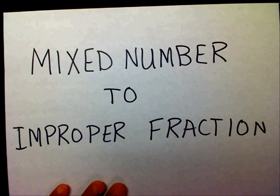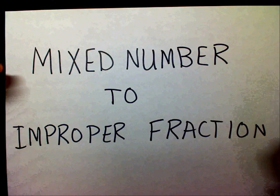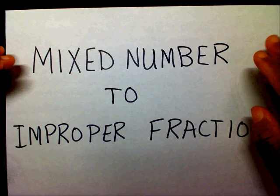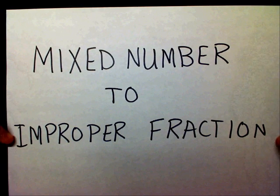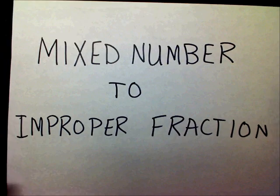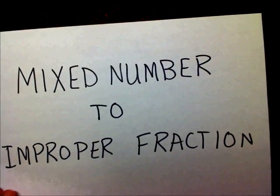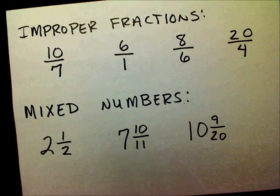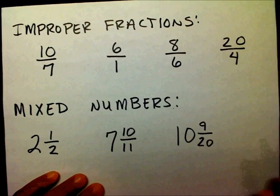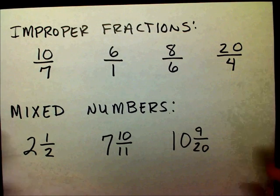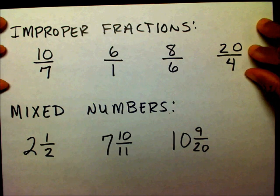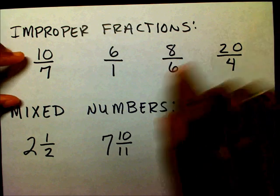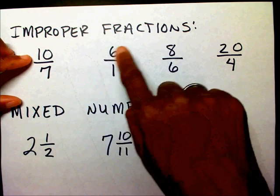Today we're going to change a mixed number into an improper fraction. Let's just review what the two look like. These are improper fractions. If you notice with an improper fraction, the numerators are larger than the denominators.